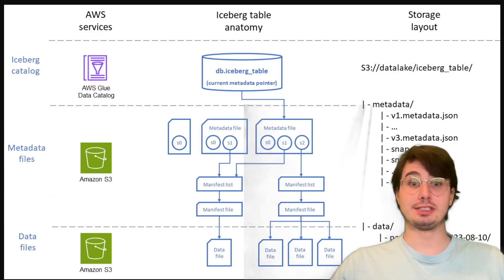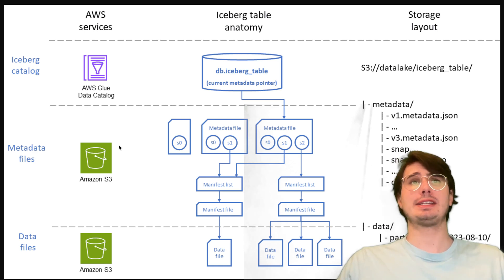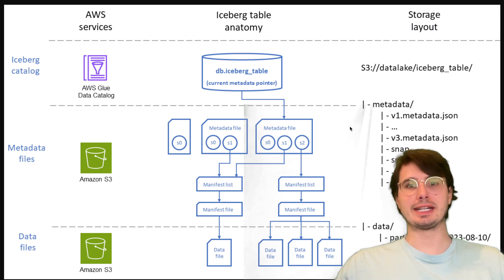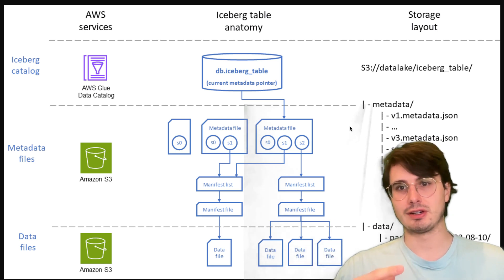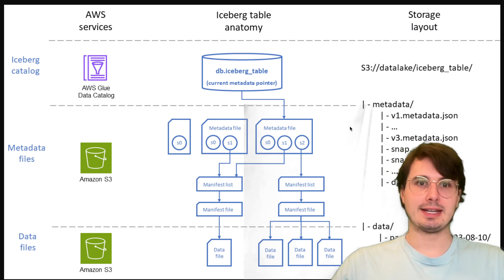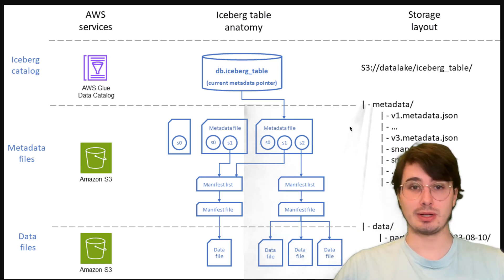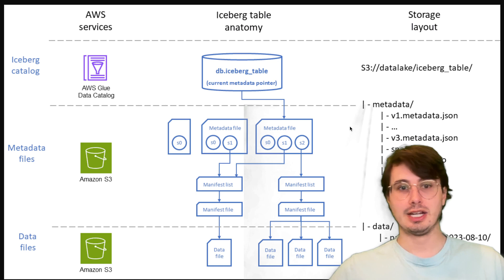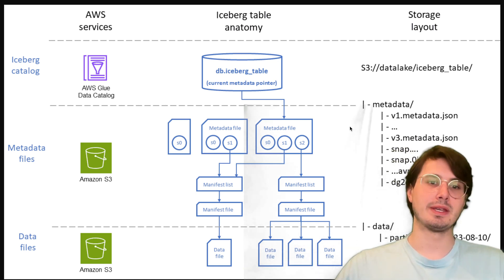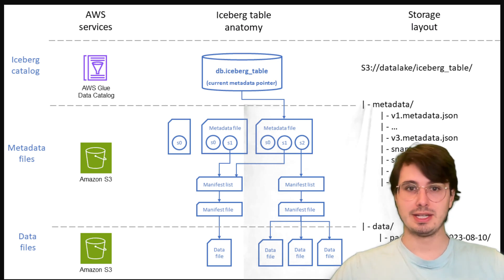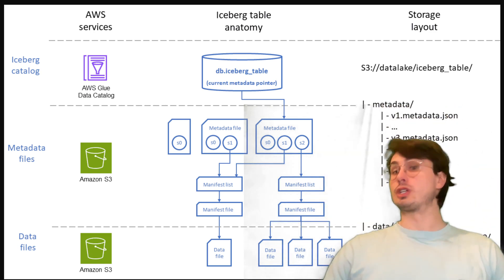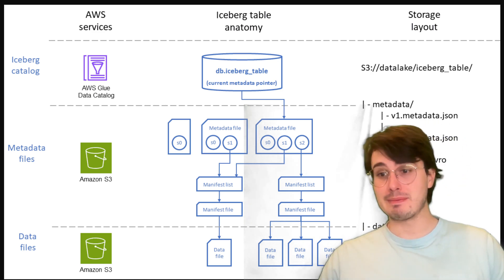The next topic is query optimization. Metadata tables are really important here. You have metadata tables like files, snapshots, and manifests that you can use to analyze different snapshots and configurations of your data, helping you debug performance issues and understand table composition. Make sure you're optimizing partition pruning and that your query engines support Iceberg's partition pruning and pushdown capabilities — so use the latest versions of Trino, Spark, or Flink. There's also z-order clustering, an experimental technique that optimizes column access patterns for high-dimensional queries. It could be worth enabling if you want to go deep on storage optimization.